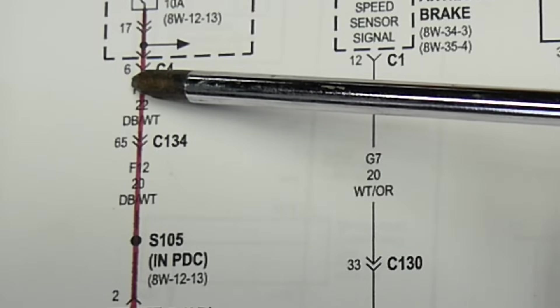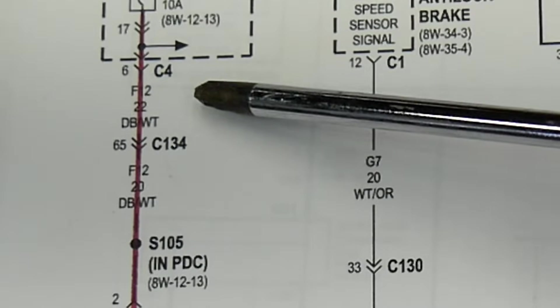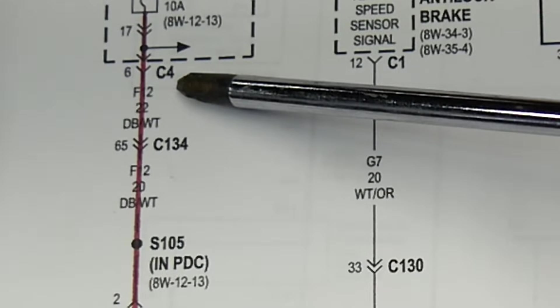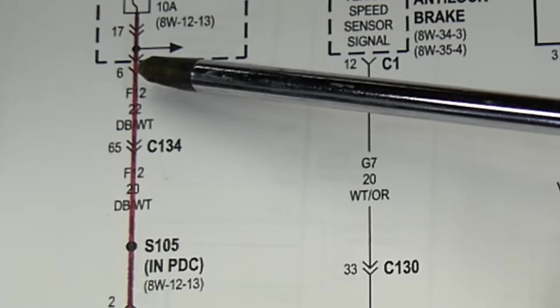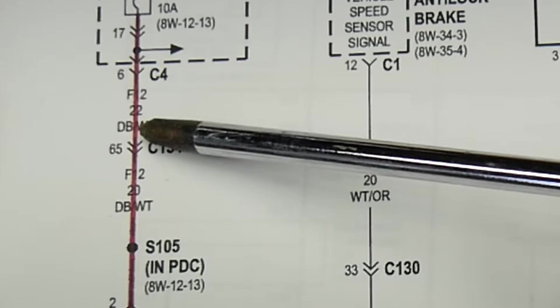that's the pin number for the connector C4. Basically, if you were to check this, you would need to go find connector 4 for the junction box. Pin number 6 is going to be this wire. This is the color of the wire.